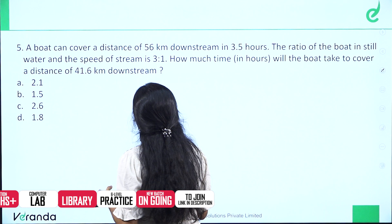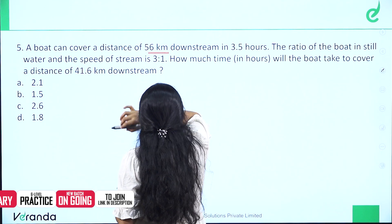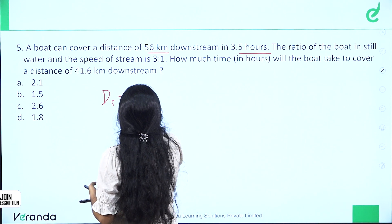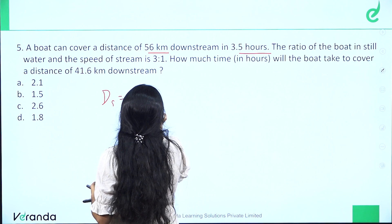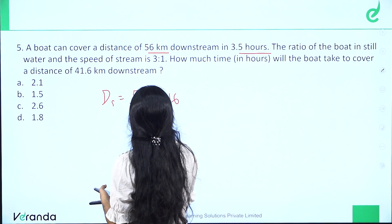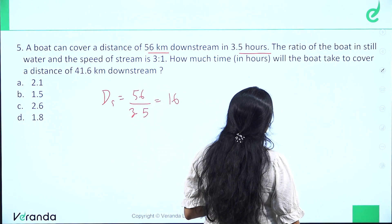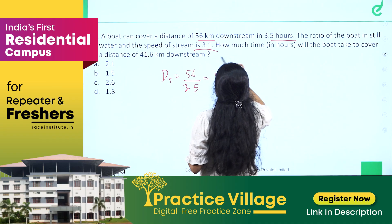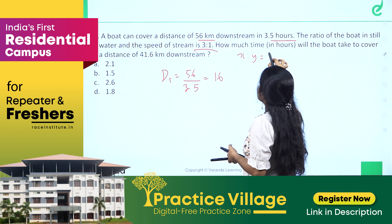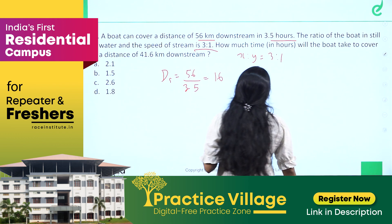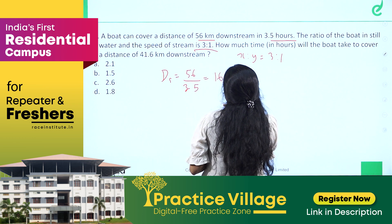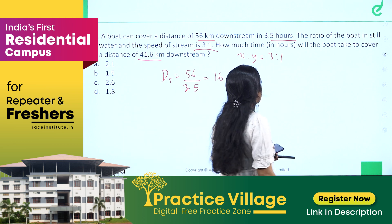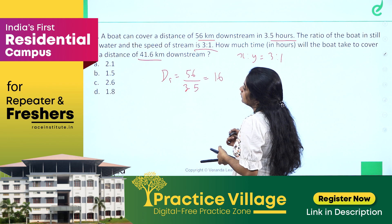A boat can cover a distance of 56 km downstream in 3.5 hours, so downstream speed is 56 by 3.5 which equals 16 km per hour. The ratio of the boat speed in still water to the speed of the stream is 3 to 1. How much time will the boat take to cover a distance of 41.6 km upstream?